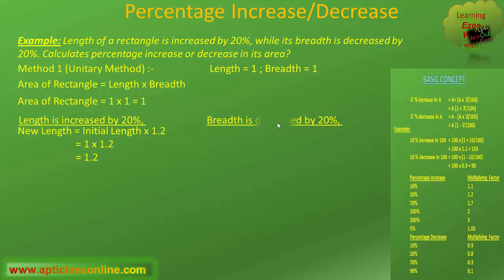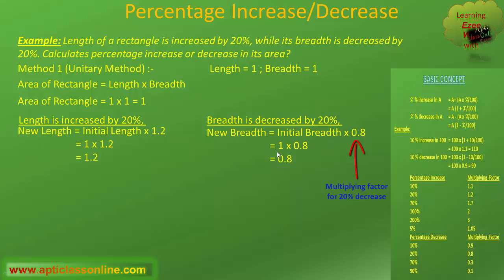Whereas, the breadth of a rectangle has been decreased by 20%. That means we will have to multiply the initial value by 0.8, as 0.8 is the multiplying factor for 20% decrease, to get the final value of breadth. So, after decreasing 20% in breadth, it has now become 0.8.